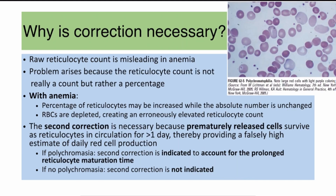The raw reticulocyte count is misleading in anemia. Although the reticulocyte count increases in anemia, the RBC count is usually decreased, which can create a falsely elevated reticulocyte percentage. Therefore, we need to correct the reticulocyte count to avoid this error. In certain cases, a second correction is also needed when there are many premature cells in circulation.